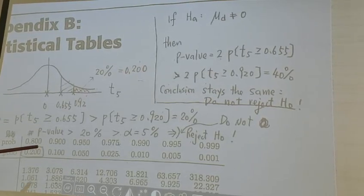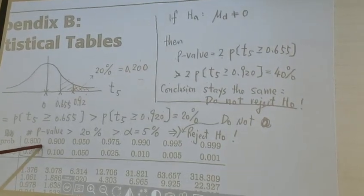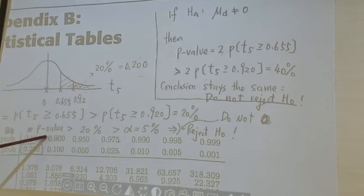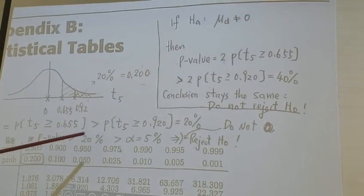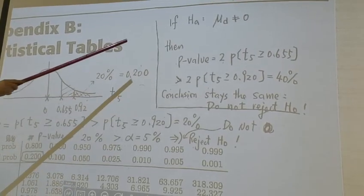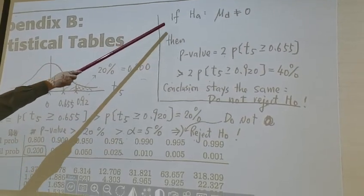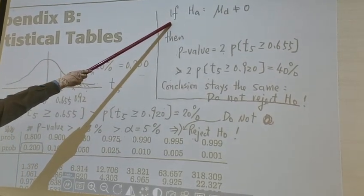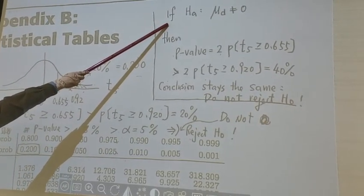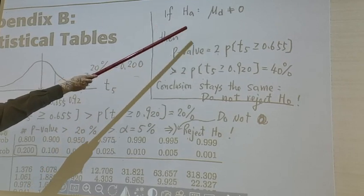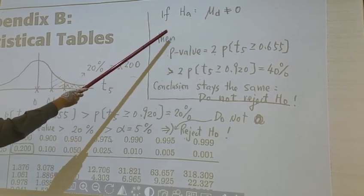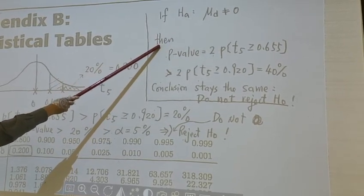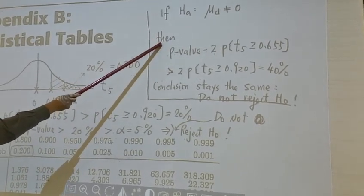Now, let's look at this table. If this table is used, if we change Hₐ from μD greater than 0 to μD not equal to 0, then how are we going to modify the p-value?